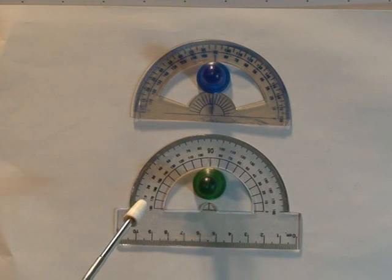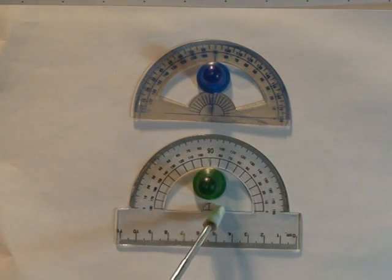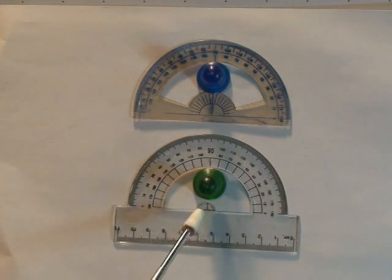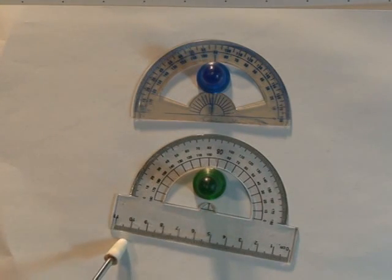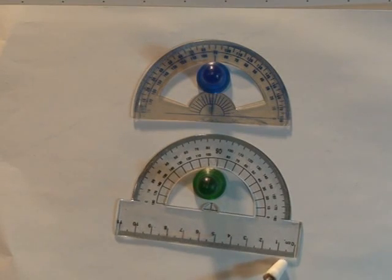And with this protractor the baseline is here. And the origin is here. The baseline is not here. This is just the ruler part that you could use to measure things in centimeters.